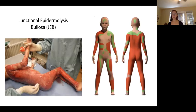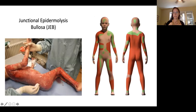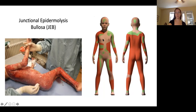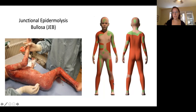A patient presented with a very severe form of JEB, showing a schematic where anywhere in red he had completely lost his epidermis — the top layer of skin — and anywhere in green there was severe blistering. Life like this is incredibly painful. Individuals with this disease usually don't live very long, because without your epidermis you're subject to a large number of infections that skin would normally physically keep out, and you can't have a normal social life.